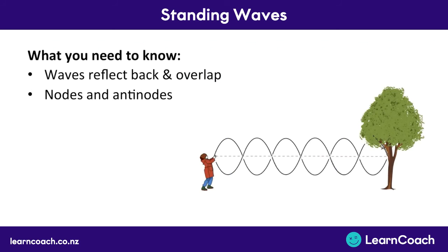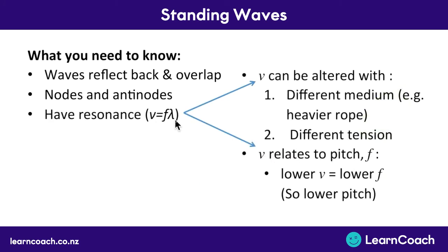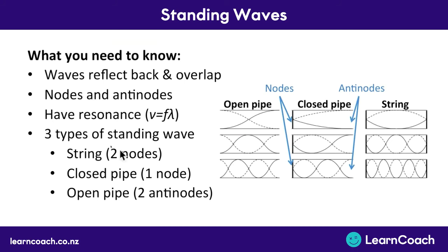Here's what you need to know from this video. A wave travels along the medium and reflects back — same for a pipe as for a string. The incident and reflected pulses interfere to create antinodes, the areas of maximum amplitude, and nodes, the areas of no movement. We also learnt about resonance and the formula V equals F lambda: you can change the velocity by changing the medium — heavier or lighter rope — or by changing the tension of a string. Because the wavelengths are set, if you increase wave speed you increase frequency and therefore pitch, and vice versa.